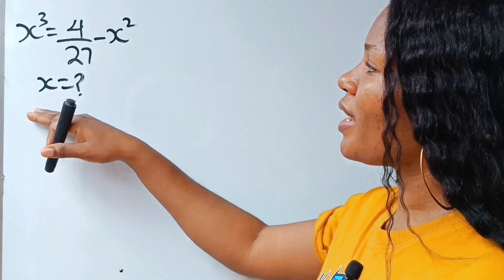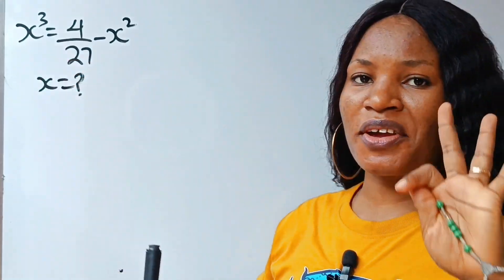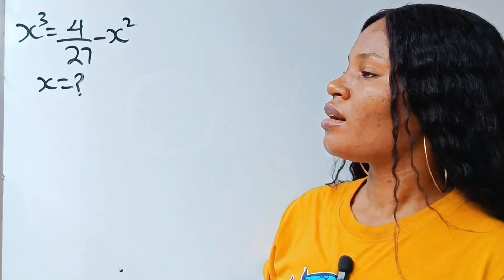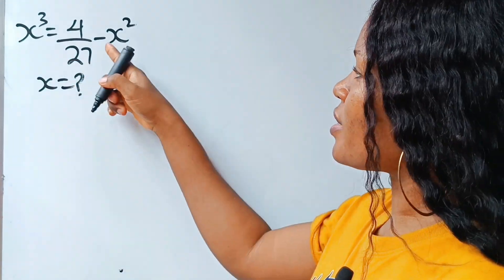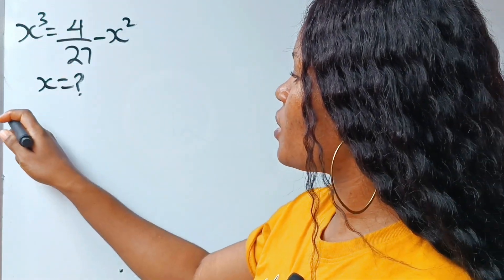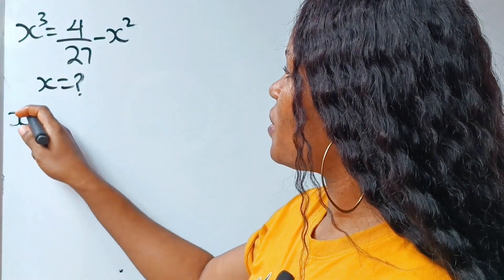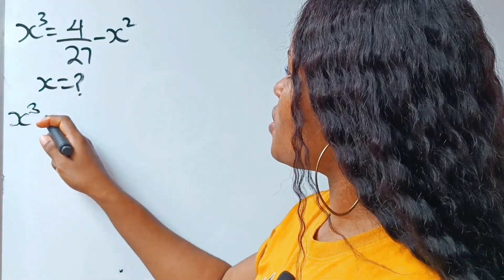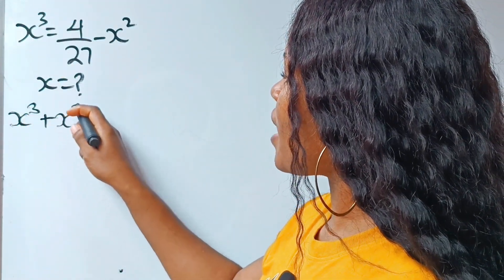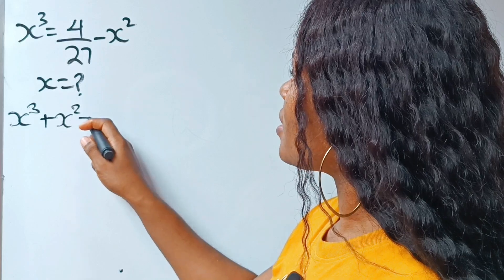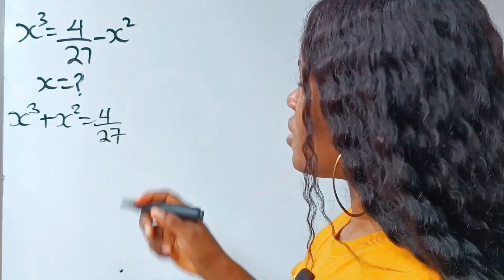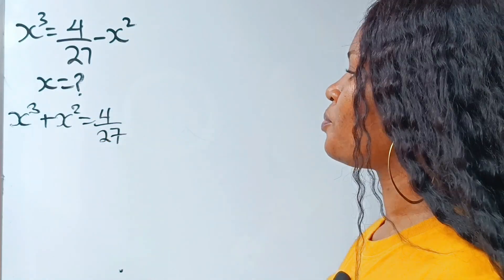Hi, let's quickly get the three values of x. First of all, let's transfer this to this side of the equation. If we do that, we have x to the power of 3 plus x squared is equal to 4 divided by 27.